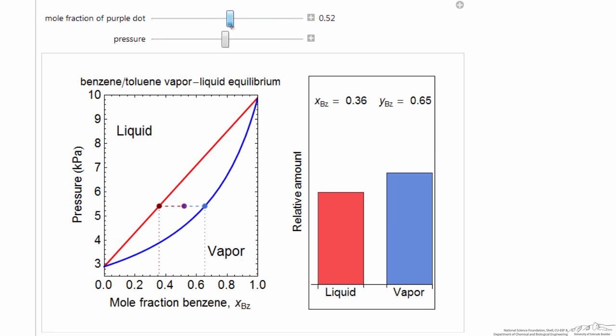Move it to the right, there is more vapor, less liquid, and the overall composition above 0.67 or so, then we have all vapor.